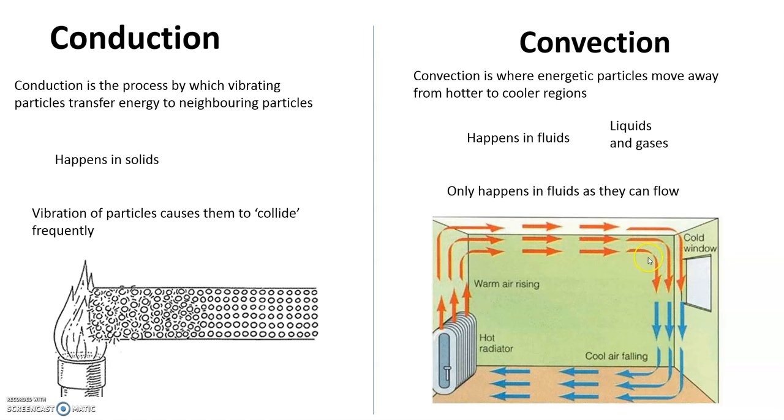If they've lost energy, they will not be moving as quickly. If the particles are not moving as quickly, then the air of those particles becomes more dense. When the air is more dense, it will start to fall. And it forms this loop, this cycle of moving hot air and cold air.